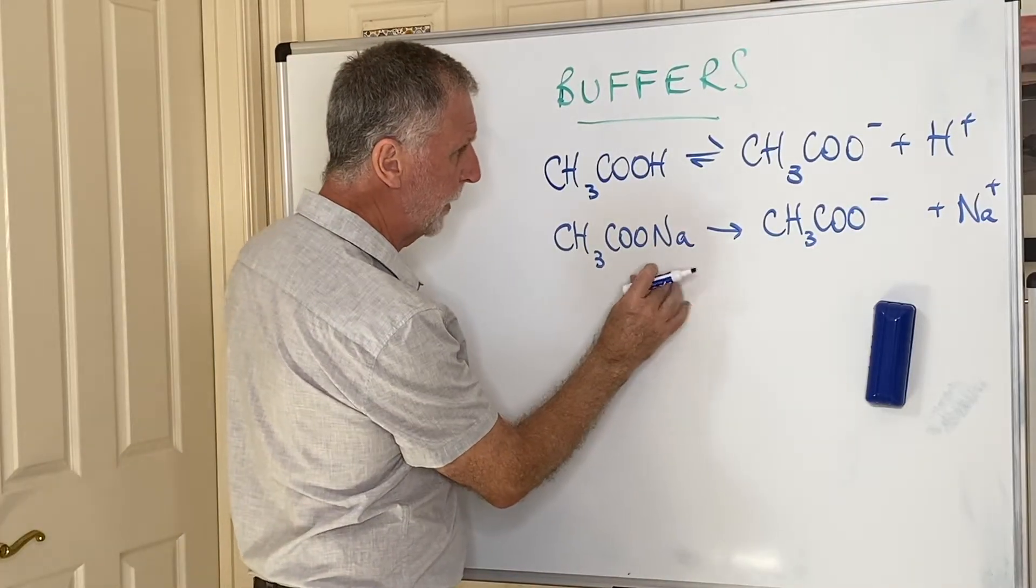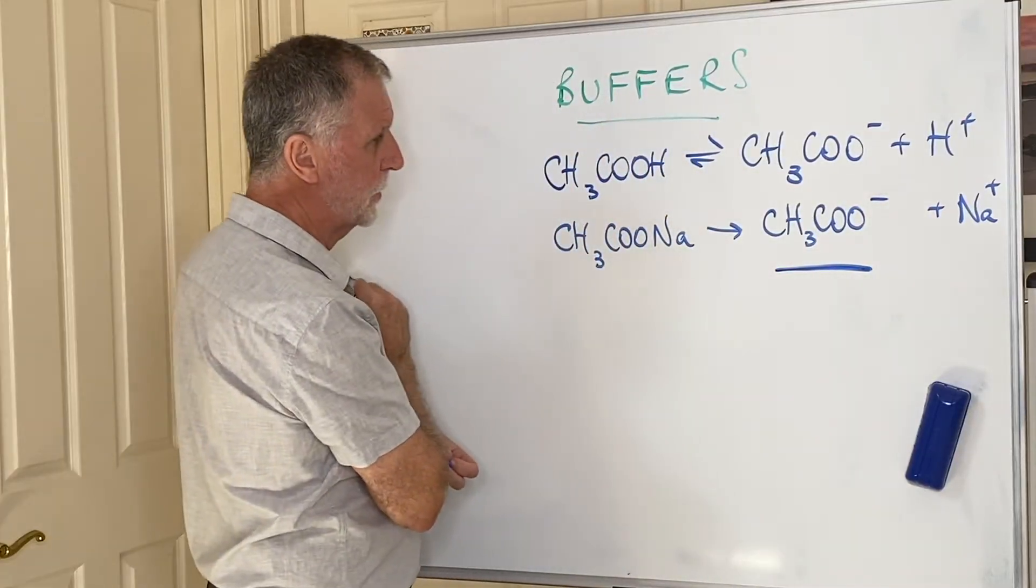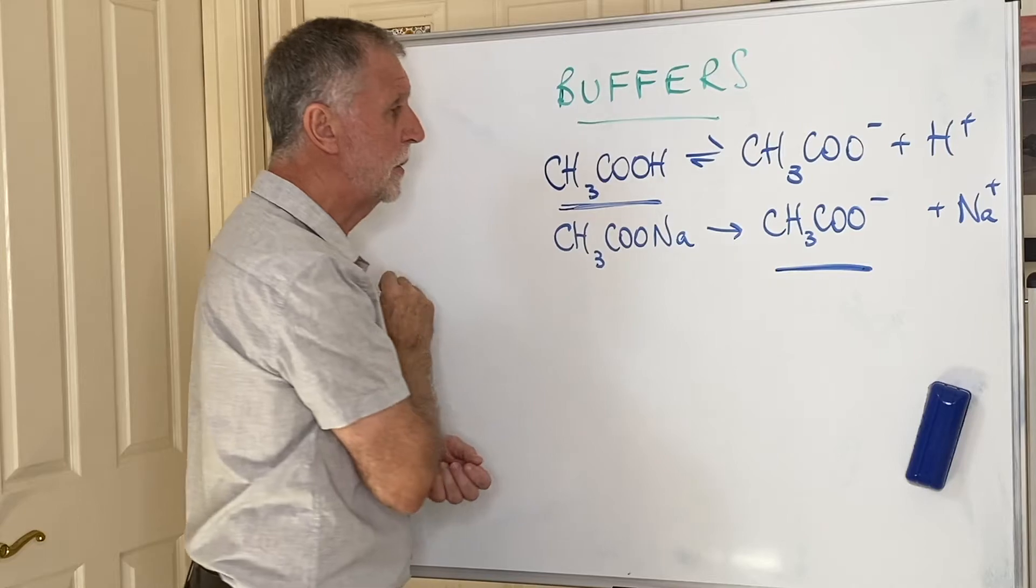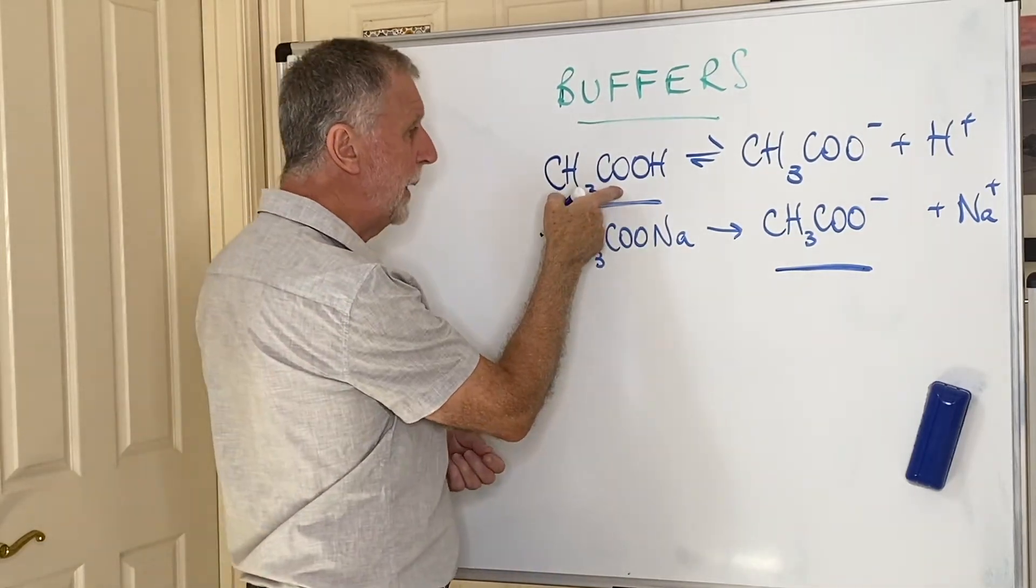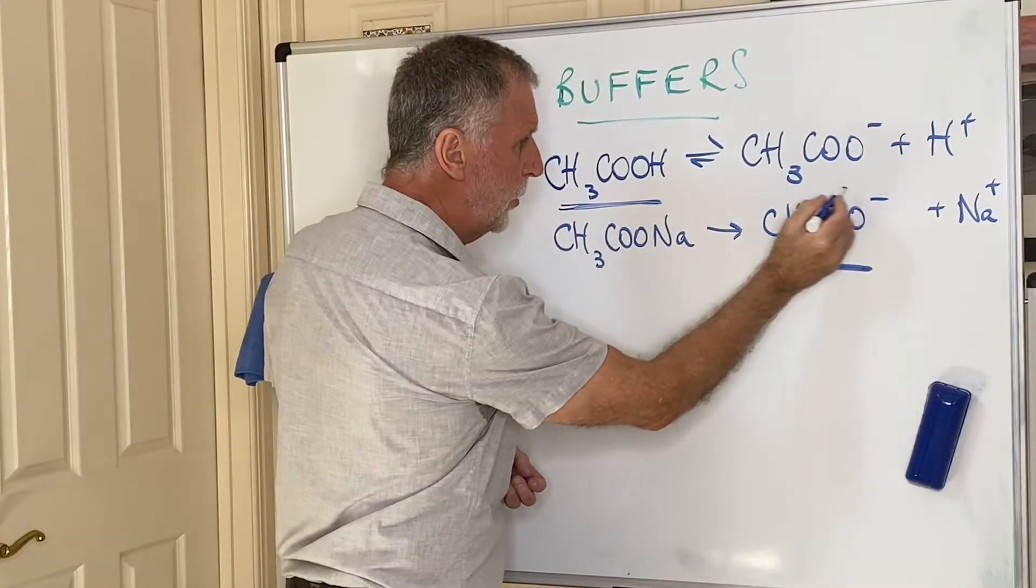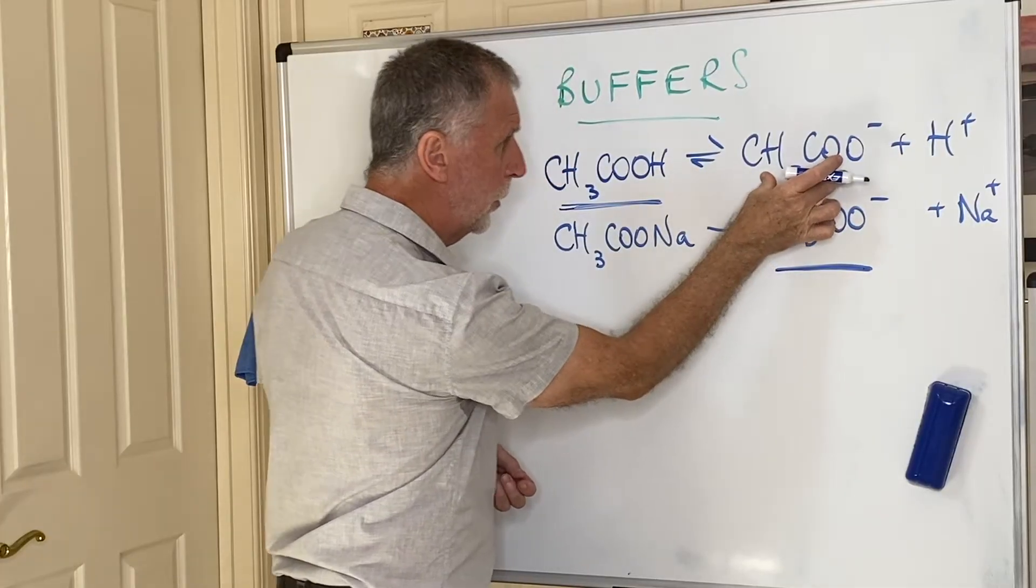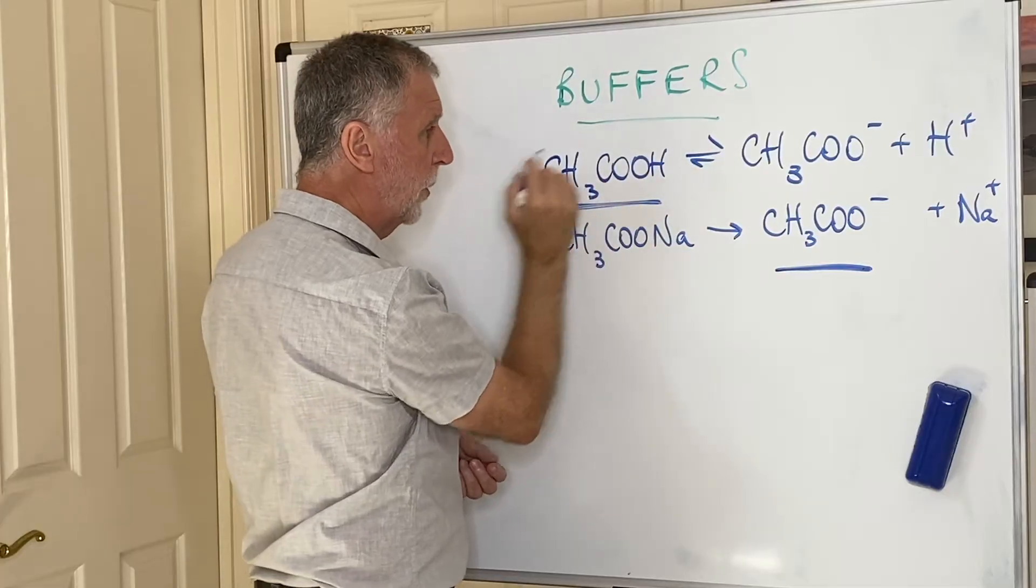We know that this is providing a huge number of those ions. We also know that there's an awful lot of those molecules present in the weak acid. However, that gets even bigger when this comes into the solution. Because by Le Chatelier, when you introduce these ions, the equilibrium here will shift to the left, producing more of the molecules.